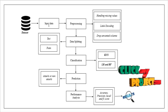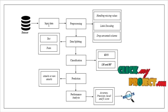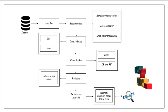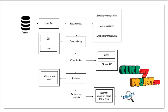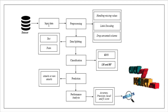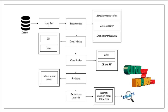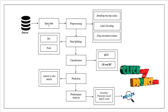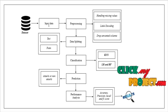In the pre-processing step, first we handle missing values. We check whether any missing values are present in the input dataset. If any missing values are present, we replace them with zeros or mean values. After that, we perform label encoding, where we encode the data into labels by converting string values into binary numeric integer values.